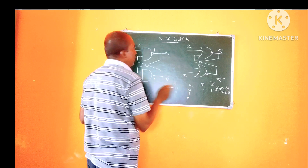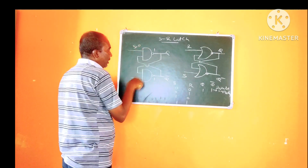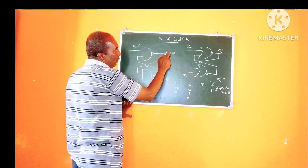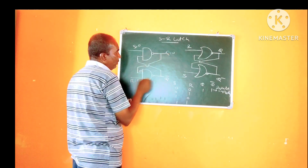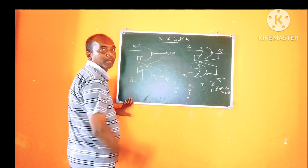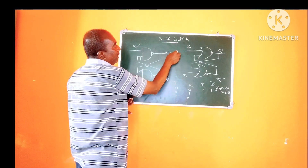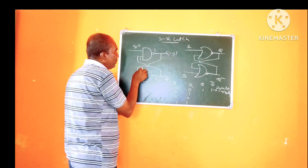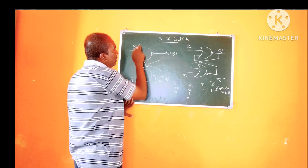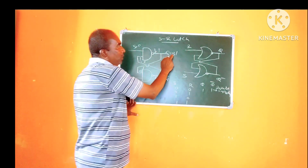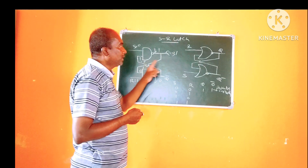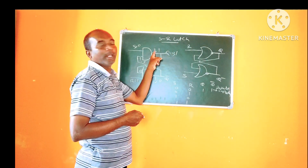Next, consider S=0 and R=1. If the present state is 0, the NOR gate logic gives a next state of 1. If the present state is 1, the feedback through the gates also results in a next state of 1. Therefore, by assuming any present state, the next state is always 1. Hence, this is the set state.